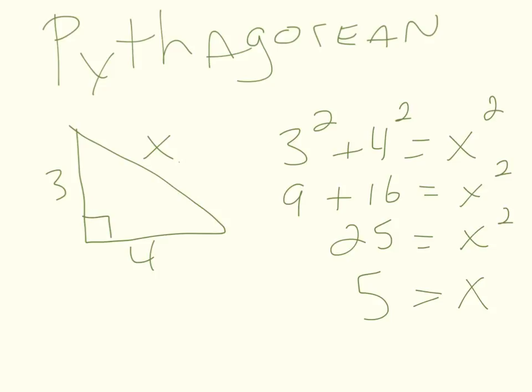You're going to have to be able to use Pythagorean theorem. That's a squared plus b squared equals c squared. It's going to let us find one side.